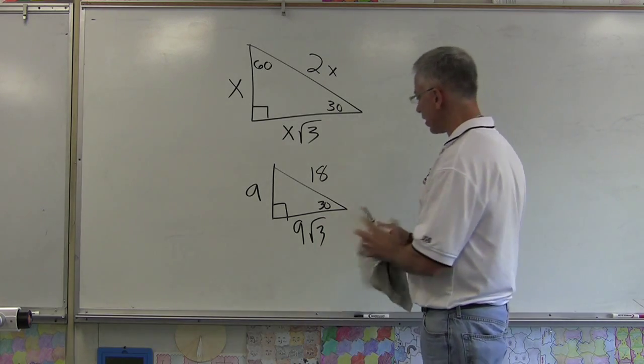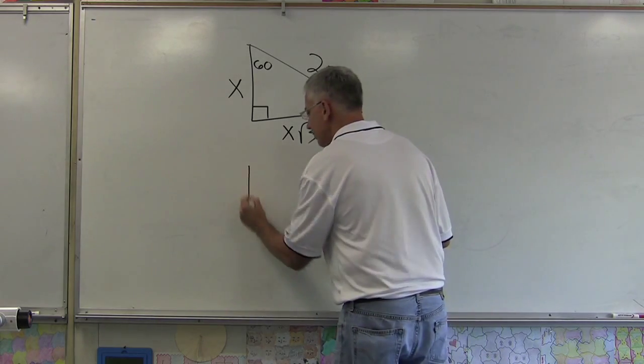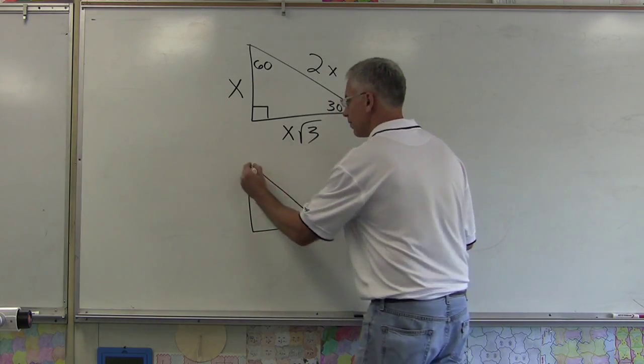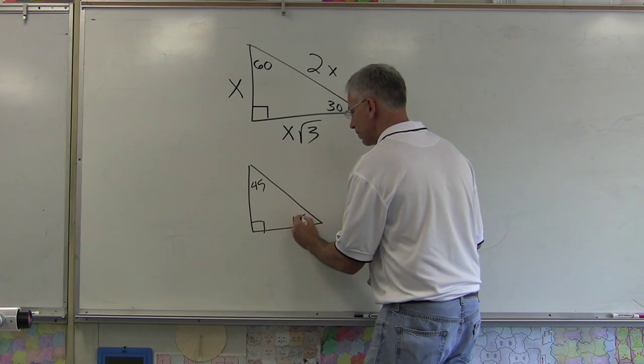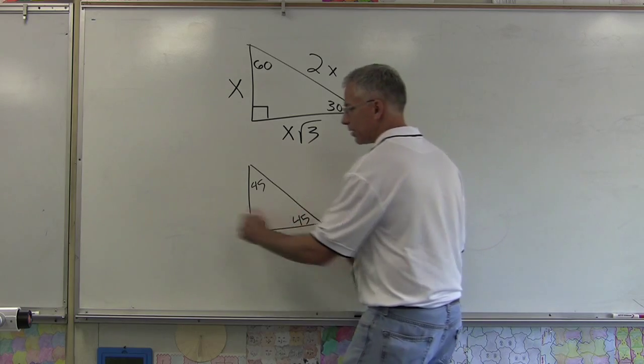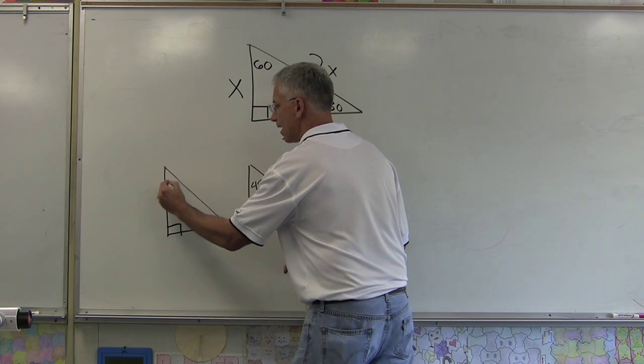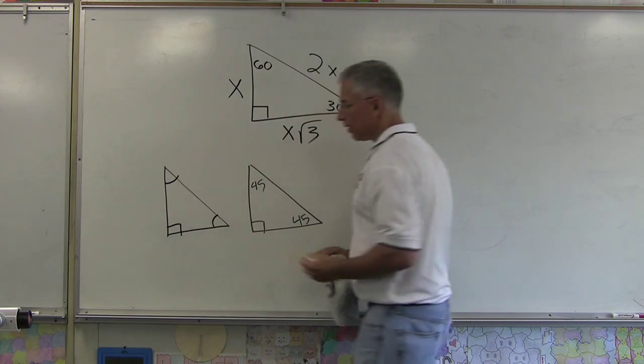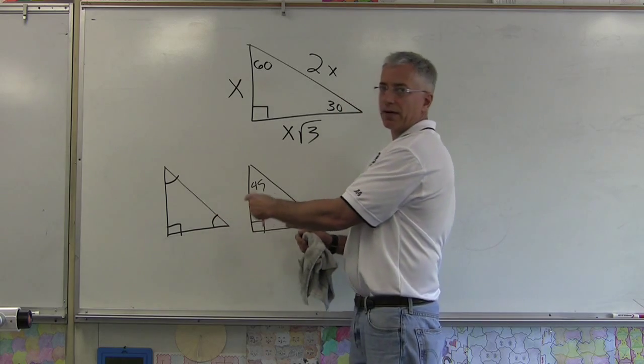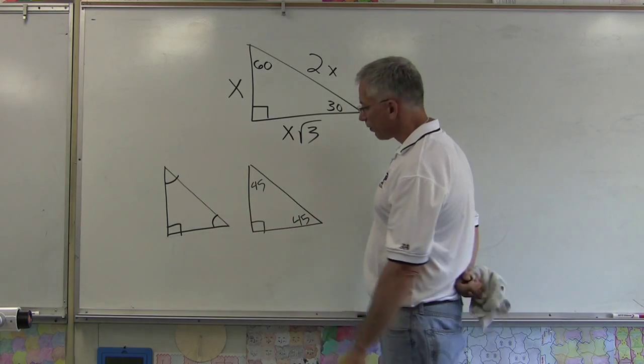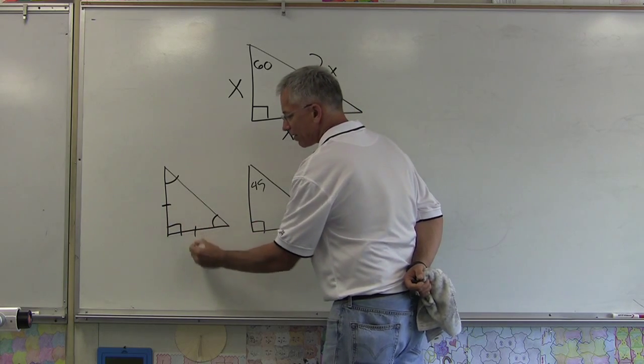Okay, one more: 45-45-90s. Got a 90 right there, 45 degrees, 45 degrees. Sometimes they may do this—let me do the same triangle over here—they may just tell you that these angles are congruent. Well these triangles are the same—they're isosceles right triangles, they're 45-45-90 triangles.